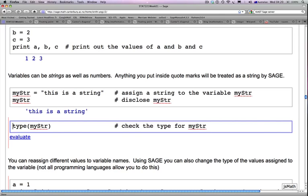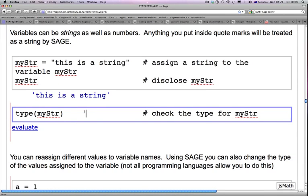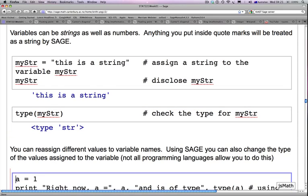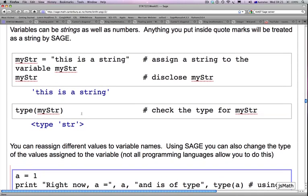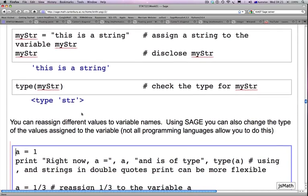Now, if I ask, what is the type of mySTR, then it will tell me this is a type str, simply a type string. So, the variable mySTR was assigned a string, and when you ask, what is its type, it simply says it is the type string.